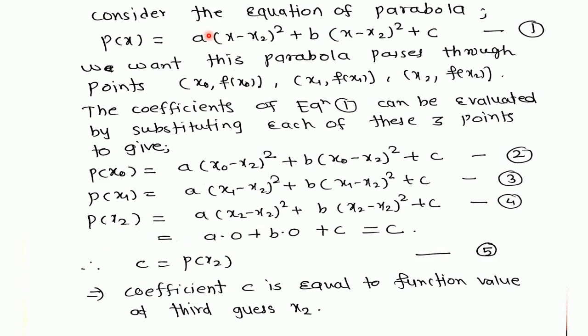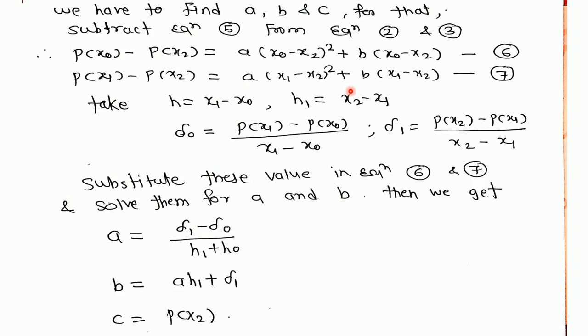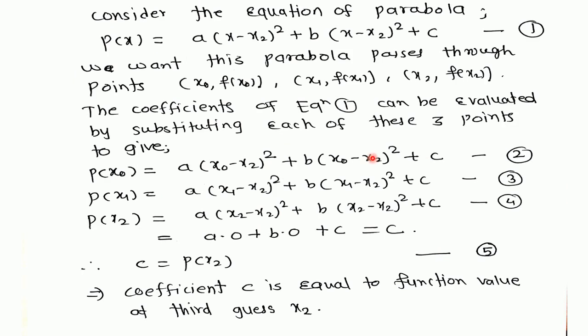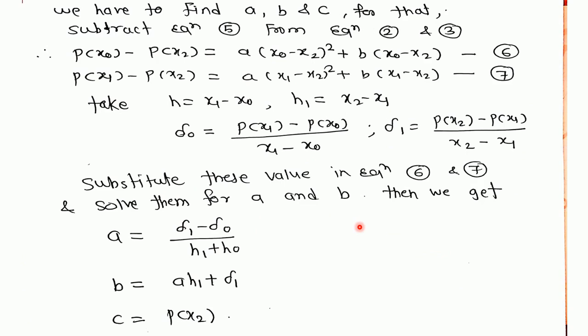Next aim is to find a, b, and c and substitute here, then we are solving the quadratic equation. We have to find the value of a, b, and c. For this purpose, subtract equation 5 from equation 2 and 3. Then we get p of x0 minus p of x2 is equal to a times x0 minus x2 squared plus b times x0 minus x2. As we are subtracting p of x2, which means this value gets 0. C minus c is 0 because value of p of x2 is c. Similarly, p of x1 minus p of x2 is equal to this. Here also, c minus c becomes 0.